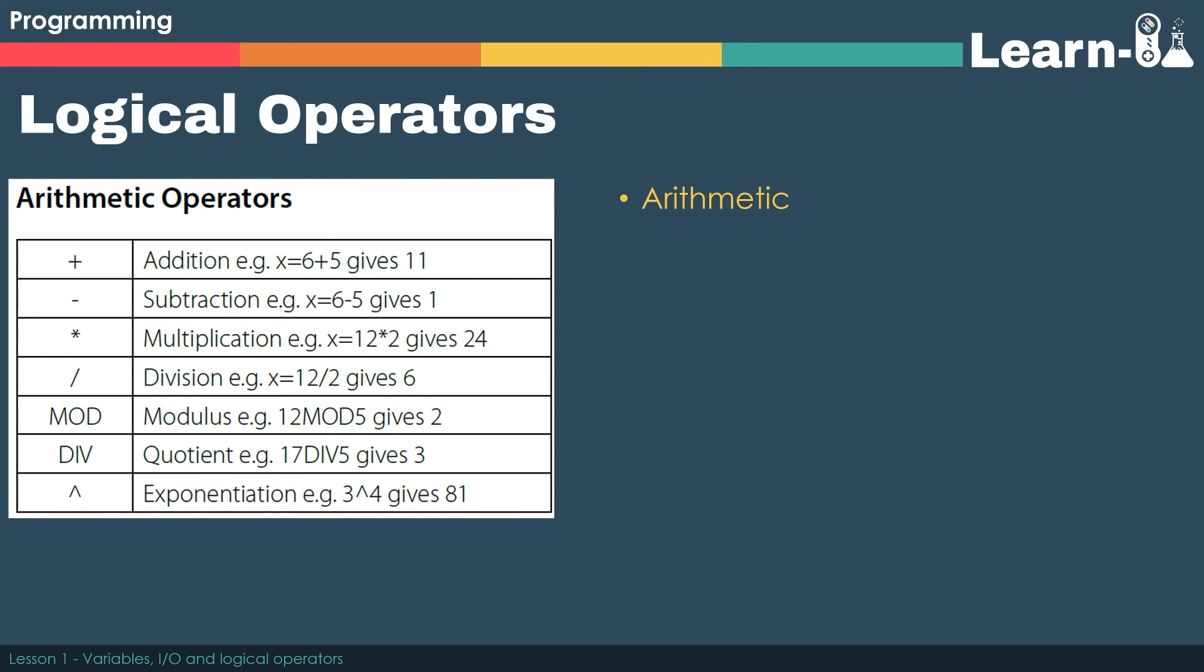The arithmetic operators are the same. We use the key term mod for modulus rather than a percentage sign, and div rather than the Python double slash. Mod and div make their way into most papers, so you should pay particular attention to them. Finally, we use the caret symbol to show powers, so in the example, 3 to the power 4.